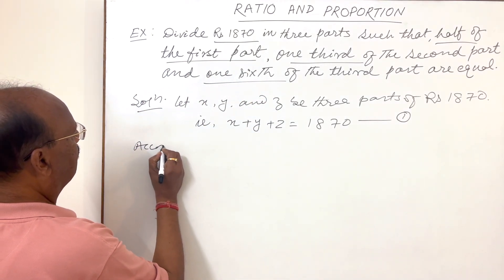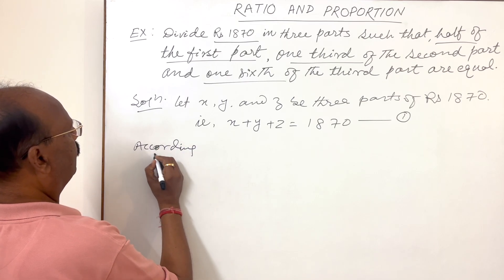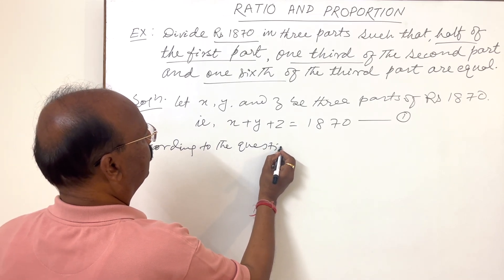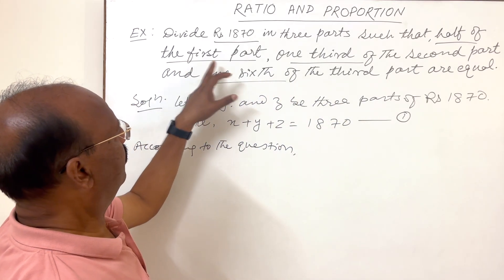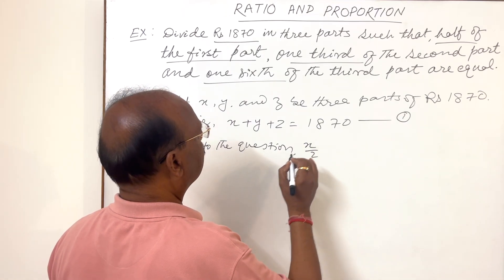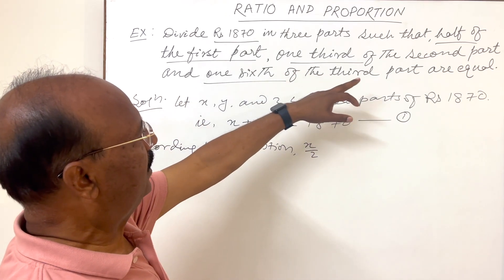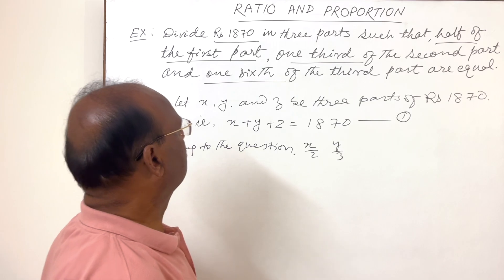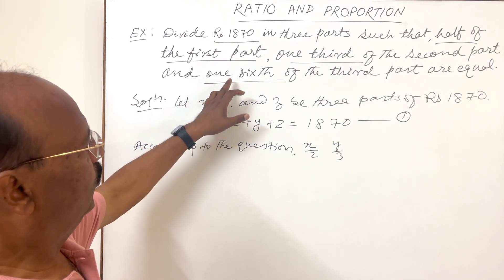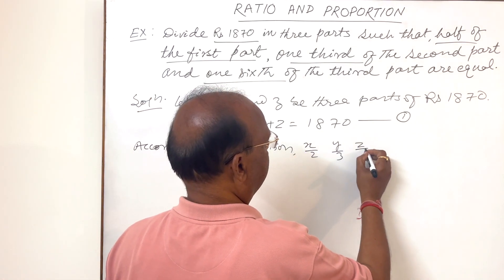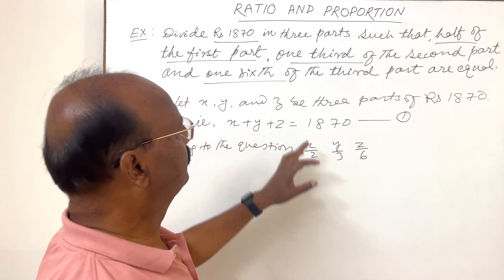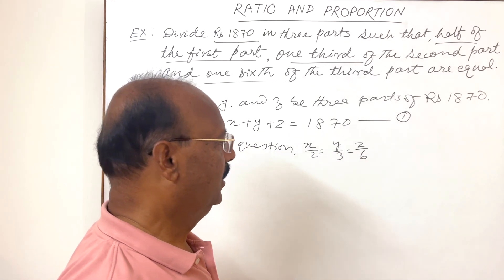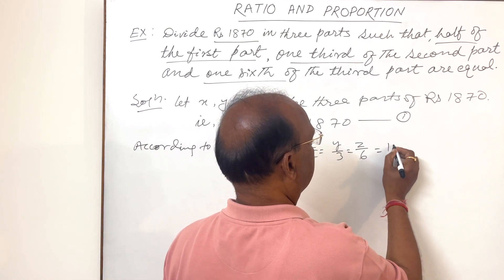According to the question, half of the first part means x by 2, one third of the second part means y by 3, and one sixth of the third part means z by 6. These three ratios are equal.